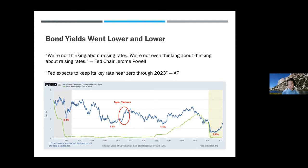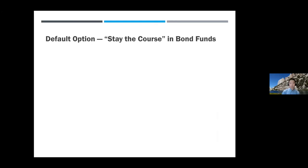Then COVID hit, and we got even lower than the previous low — the 10-year yield hit 0.6%. Now the yield has come up a little. Where is it heading? We don't know. Is it another taper tantrum, heading up a little and then going down again? It's a possibility. Interest rates in other countries have gone negative — will the U.S. go negative? It's possible. We may be in this low-yield environment for a long time.